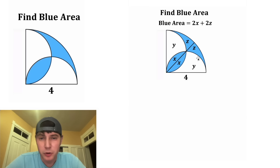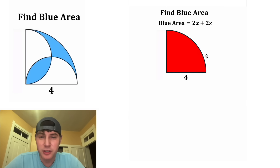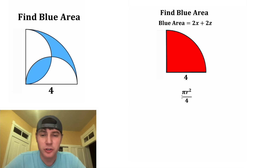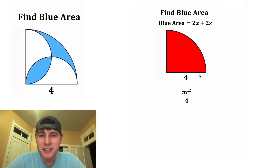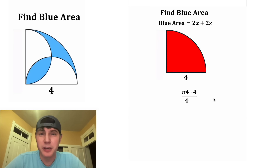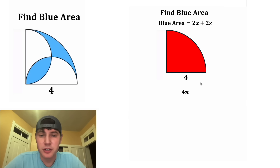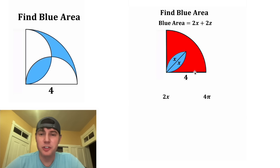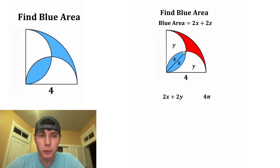So now we've got to do some work to find x and z. First, let's look at the entire quarter circle. The area of a quarter circle is pi r squared divided by 4. The radius of this quarter circle is equal to 4, and 4 squared means 4 times 4. We can cancel out these two 4s, so the area of this quarter circle is equal to 4 pi. And this 4 pi is the same thing as two of these x's plus two of the y's plus two of the z's.